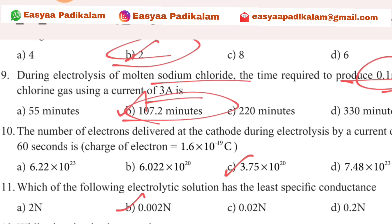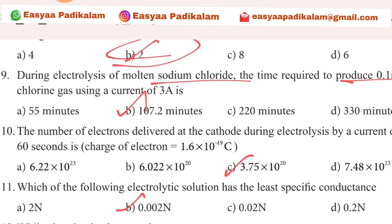Tenth question: the number of electrons derived by cathode during electrolysis of 1A in 60 seconds. We will choose the daily word. If you have a delivery, you can do it at 3 o'clock. The answer is 3.11.